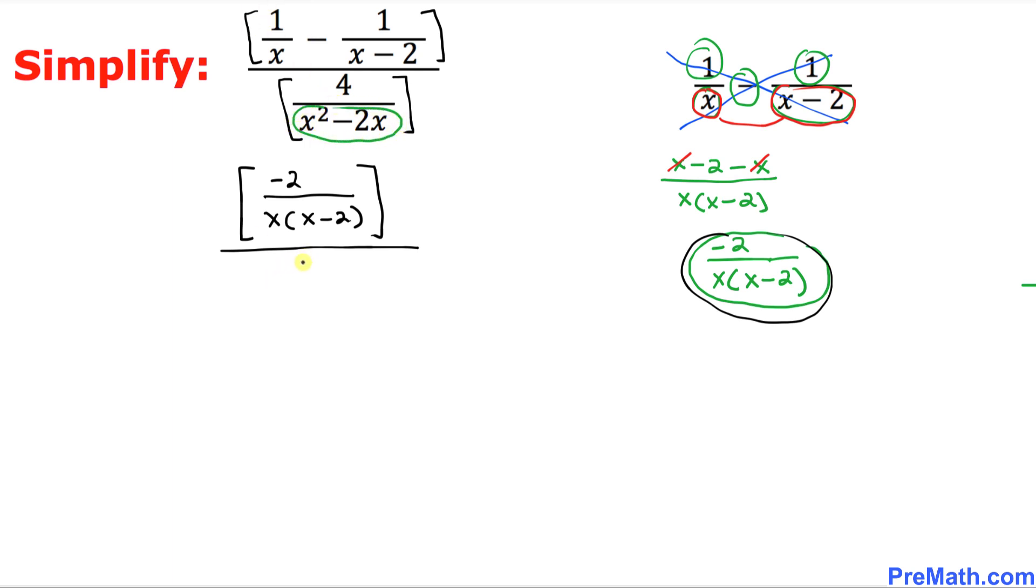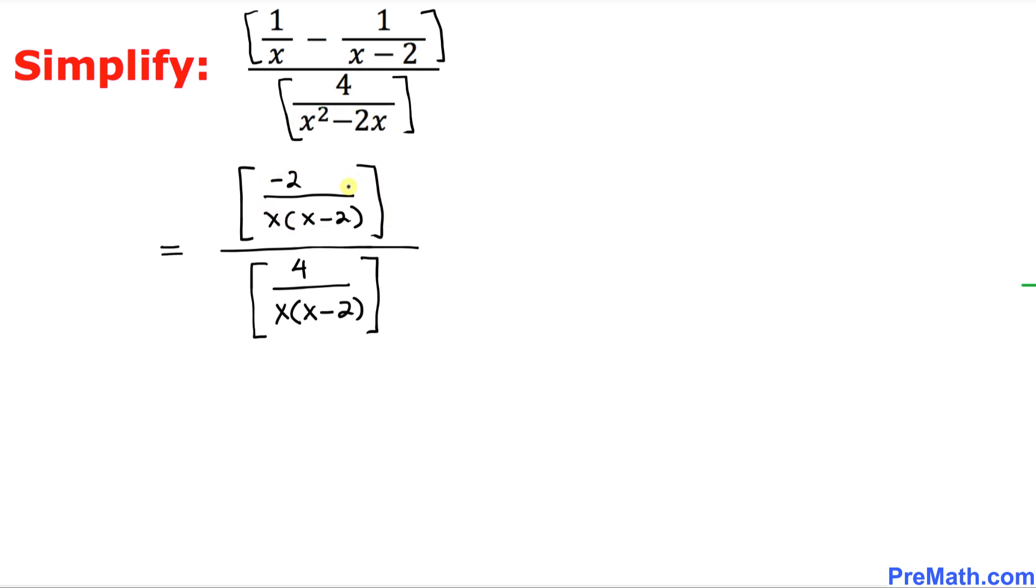The denominator over here, and this one we can write 4 divided by... here we can see x could be easily factored out. We are going to put x times x minus two, so far so good. And just put a bracket on that one as well.